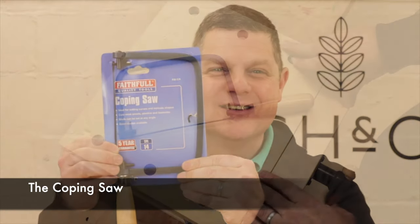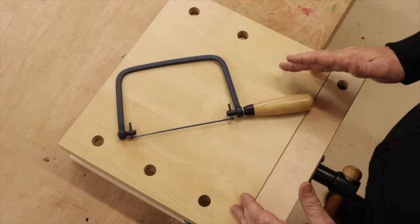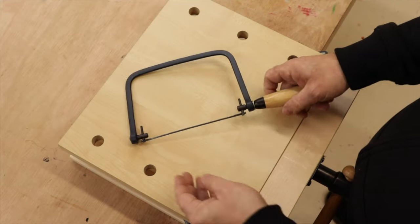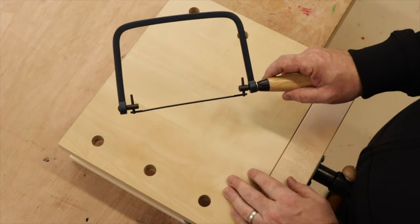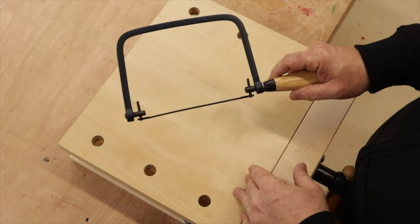Next up, the coping saw. When it comes, you take it out of the packet, and you will notice that the blade is facing the wrong way. So the first thing we've got to do is get that sorted out.